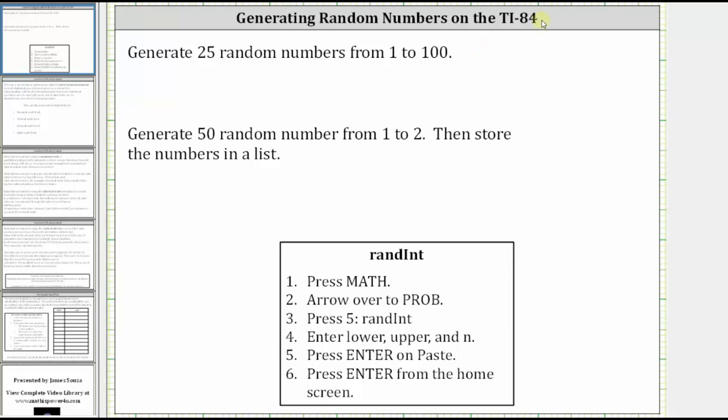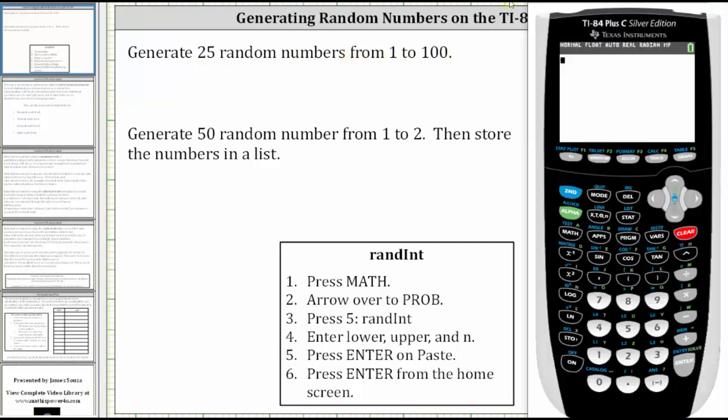For our first example, we will generate 25 random numbers from 1 to 100. To begin, press MATH, right arrow to PROB for probability.